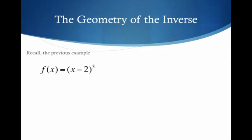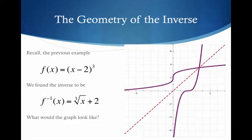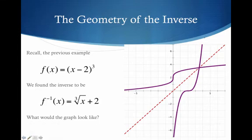Let's go back to the example we ended with last time in finding the inverse algebraically. We had f of x equals x minus 2, all cubed. We algebraically found the inverse to be the cube root of x plus 2. So what does the graph look like? I have shown you before that this is f right here — the cubic function, y equals x cubed shifted to the right two places.